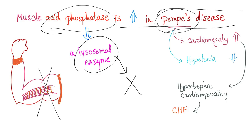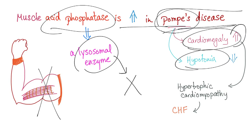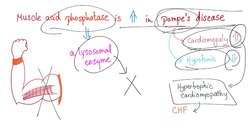Pompe's disease is characterized by cardiomegaly and hypotonia — an increased heart size and decreased muscle tone. This cardiomegaly represents a hypertrophic cardiomyopathy, which is pretty good at pumping blood but very bad at receiving blood. If the heart cannot receive blood, blood will pool behind the heart, leading to congestive heart failure. The famous mnemonic is: Pompe's trash is your pump.